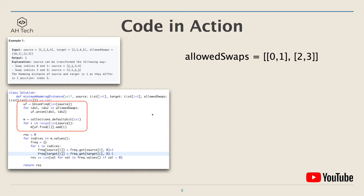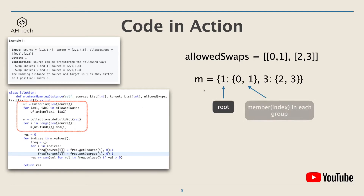The hash map m looks like this: the key is the root of each separate group and the value is the member indices in that group. For this example there are two separate groups. The first group has parent one and contains indices zero and one. The second group has parent three and contains indices two and three.